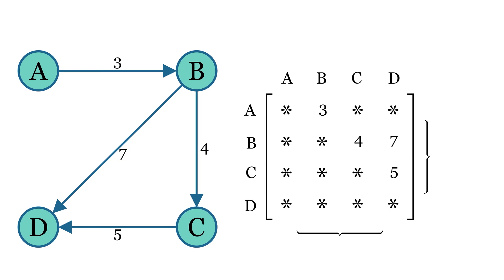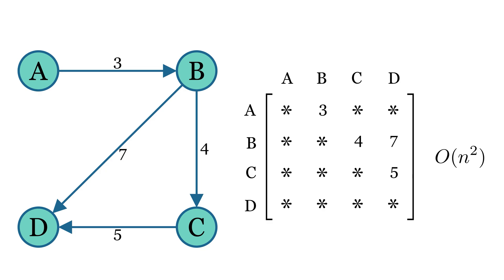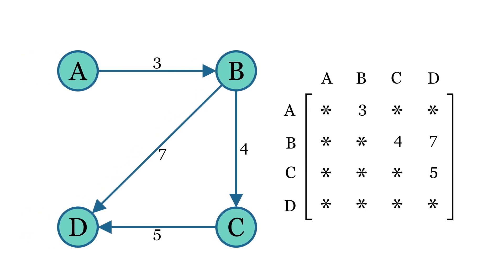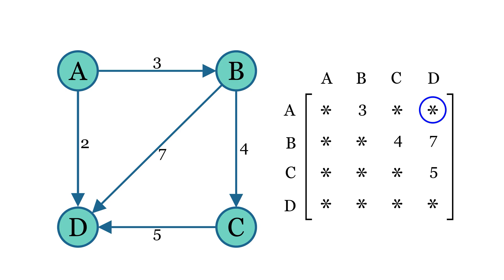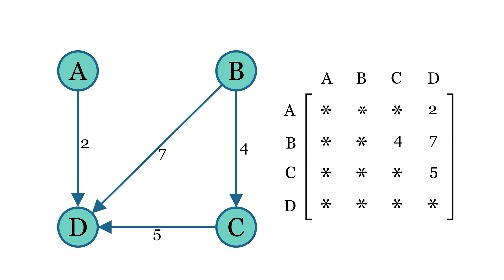This matrix is of n by n dimensions, where n is the number of nodes in the graph. So the space complexity of this representation is O(n²), which can be expensive in terms of memory usage. To find all the neighboring nodes of a given node, say node B, we need to traverse that row of the matrix. This operation takes linear time, so the time complexity is O(n). Adding an edge is a constant time operation since it only requires updating the target cell in the matrix, giving a time complexity of O(1). Similarly, removing an edge is also a constant time operation, as it only requires updating the corresponding cell.